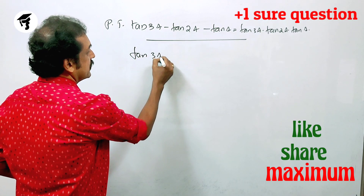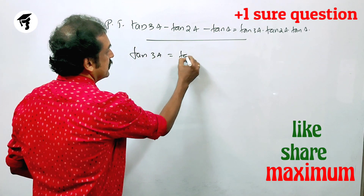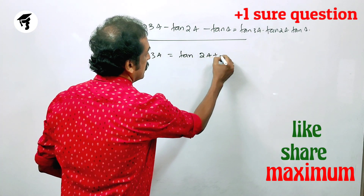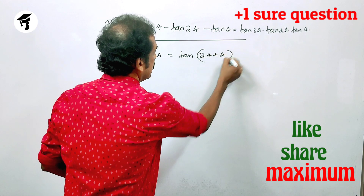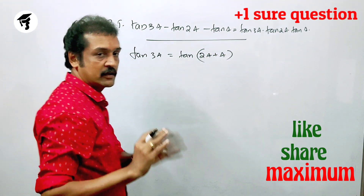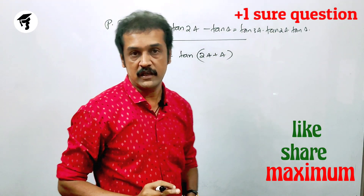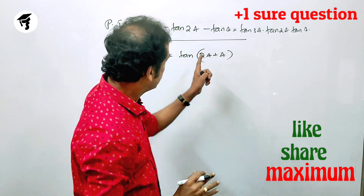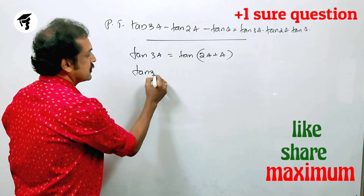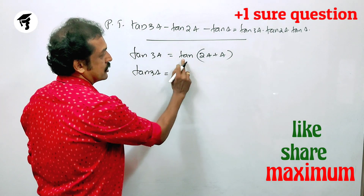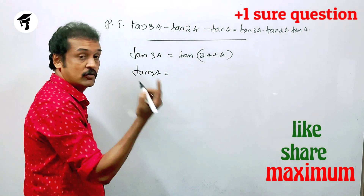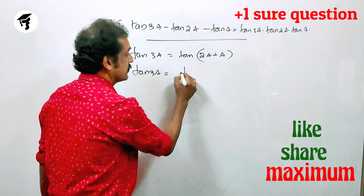We have tan(3a) is equal to tan(2a plus a). This tan(3a) is equal to tan(2a) plus tan(a). We will learn tan(2a) plus tan(a). That is, tan(3a) is equal to tan(2a) plus tan(a).